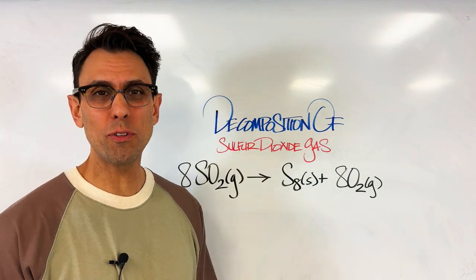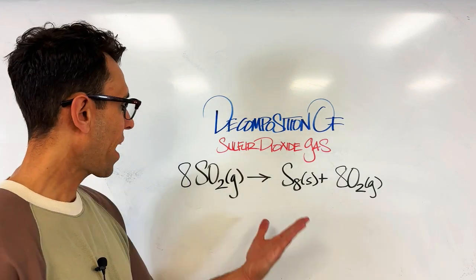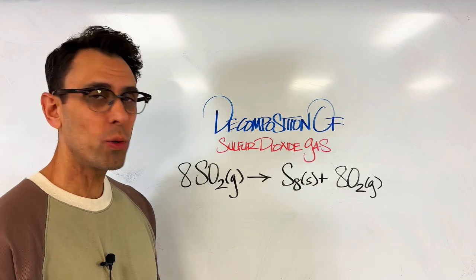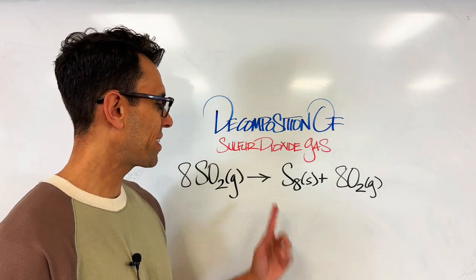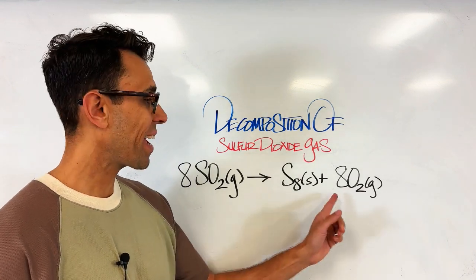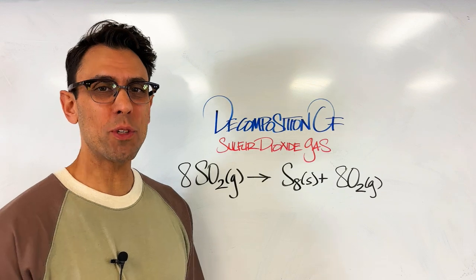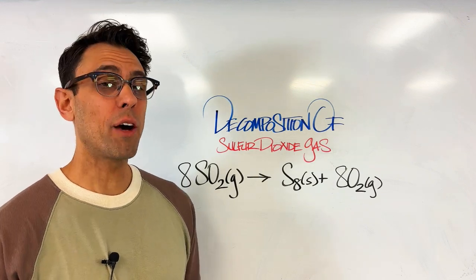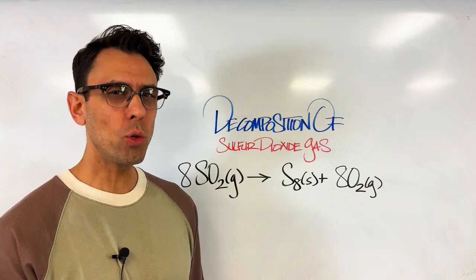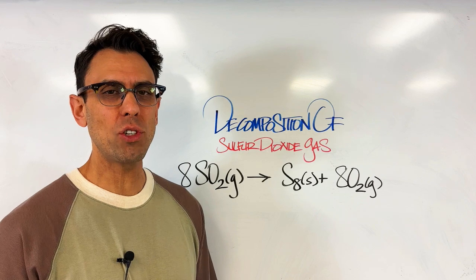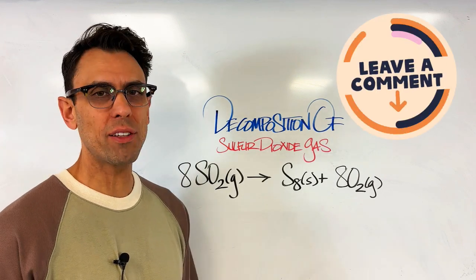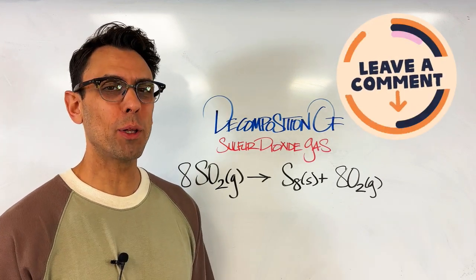Okay, congratulations if you got this question right. The answer is 8 SO2 gas decomposes into S8 solid and 8 oxygen molecules represented as O2. Now, if you didn't get this question right and you want to follow up and get some clarification on how we came up with this answer, please just leave a comment below.